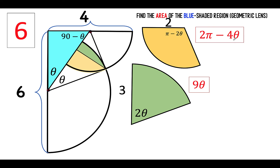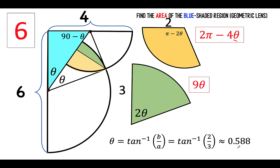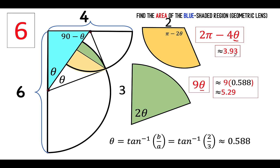The only missing piece is the value of theta. We can find theta: it is the arctangent of the opposite side over the adjacent side. Looking at this right triangle, theta equals the inverse tangent of 2 over 3. Using our calculator, the inverse tangent of 2/3 is approximately 0.588 radians. Replacing theta with this value, the area of the green sector is 9 times 0.588, giving approximately 5.29 square units. And the area of the yellow sector is approximately 3.93 square units.